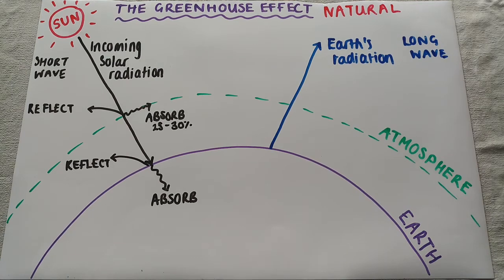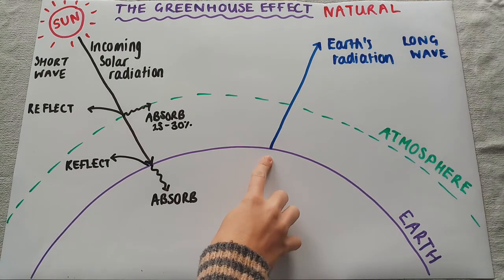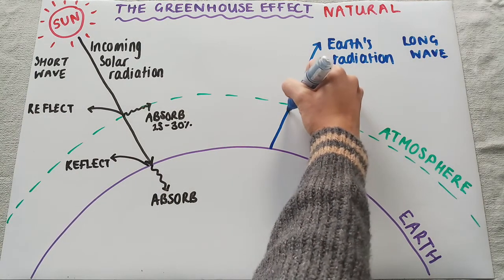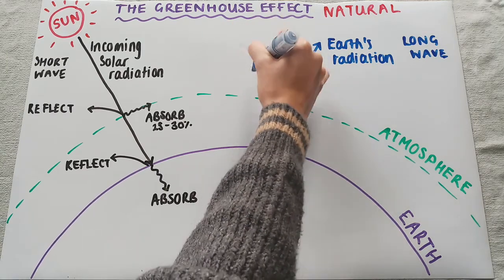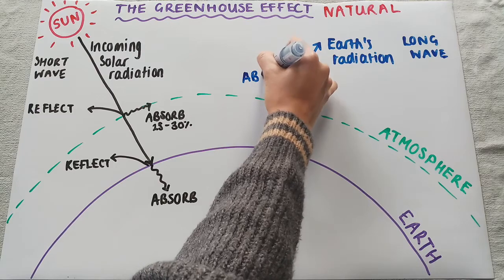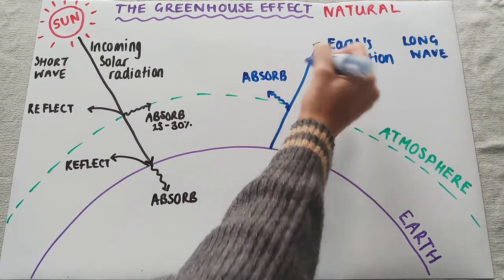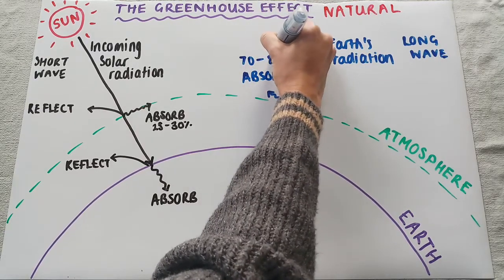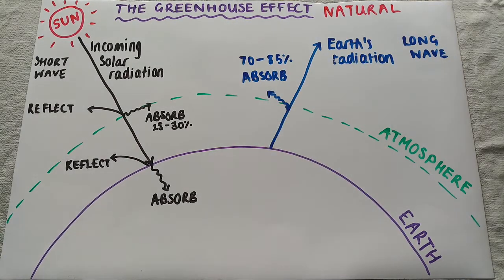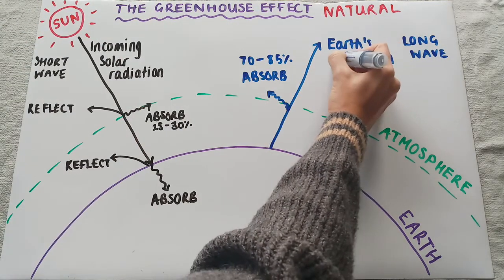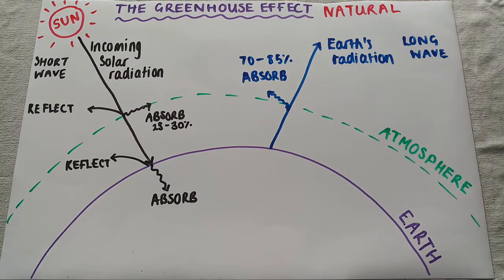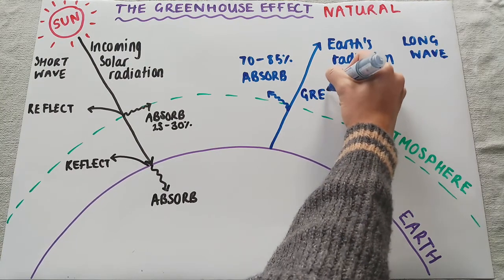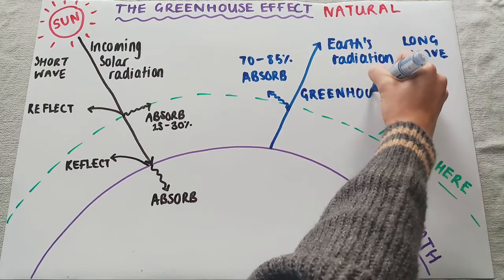Now in terms of this earth's radiation, it's not simply emitted from the earth and goes straight out into the universe. When it gets to the atmosphere, it will be absorbed. There is a particular percentage you need to know for this: between 70 and 85 percent of the earth's radiation is absorbed. This absorption is done by what are called greenhouse gases.